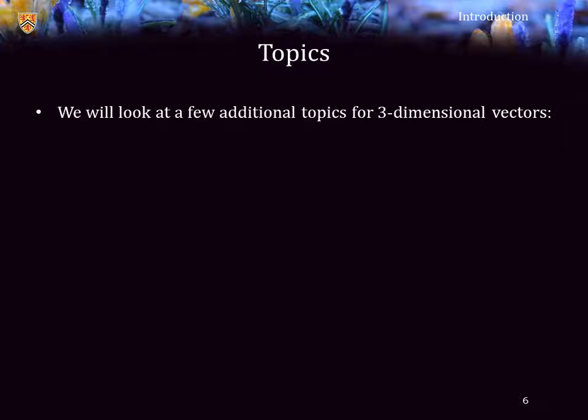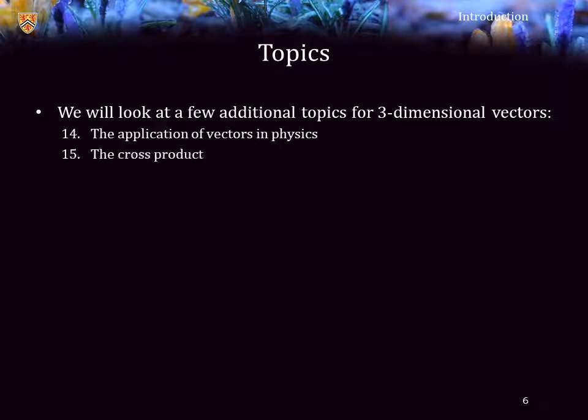For three-dimensional vectors we are going to discuss a few additional topics. We will look at the applications of vectors in physics. We will describe the cross product, which is only relevant to three-dimensional vectors, and then we'll describe the right-hand rule — all of which are applied in physics and related topics.